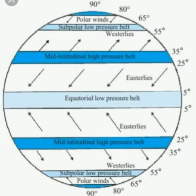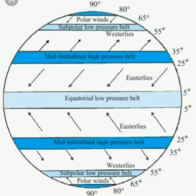Question 2: What is the direction of the westerlies in the southern hemisphere? Answer: Northwest to southeast. Question 3: Which planetary winds blow from the mid-latitudinal high pressure belts to the subpolar low pressure belts in the northern hemisphere? Answer: The westerlies. Question 4: Why is the direction of polar winds not the same in both hemispheres? Answer: Polar winds in the northern hemisphere blow from north to south, and in the southern hemisphere they blow from south to north.